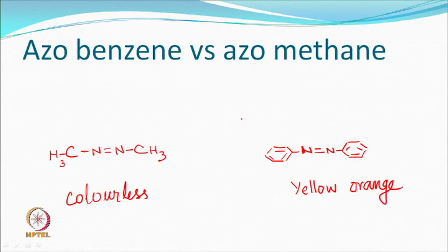There is a compound where an azo group is present, but it is a methane-type structure with a dimethyl group. On the other hand, you have an azo-benzene type structure. In both cases you have an azo group, but there is not enough conjugation. So you see it absorbs radiation, but in a region which is not in the visible range. Just having an azo group does not mean it is going to give you colour — it has to be supported, and one important support is conjugation.